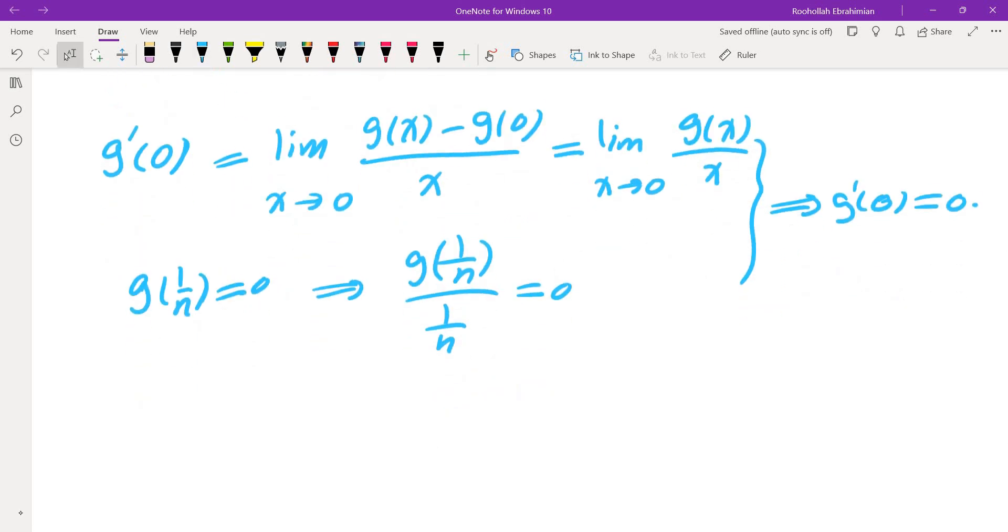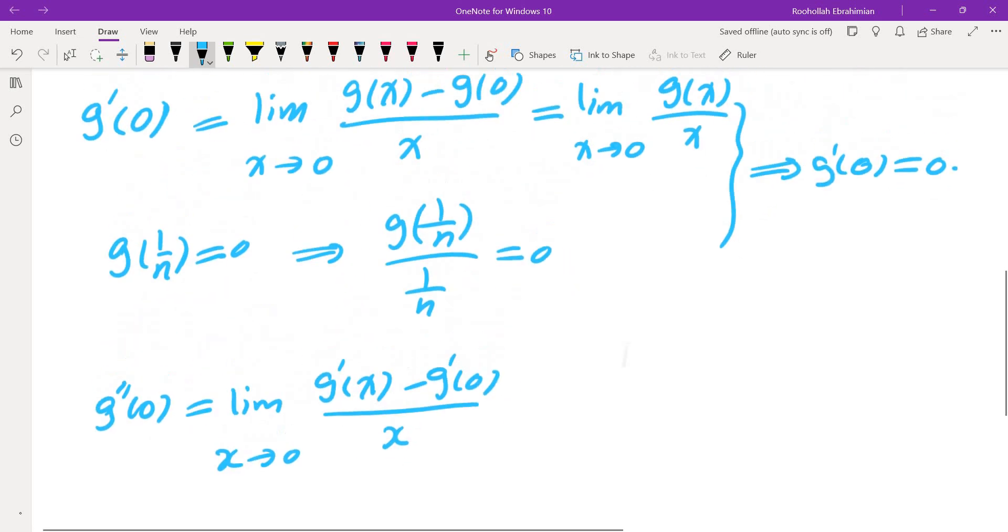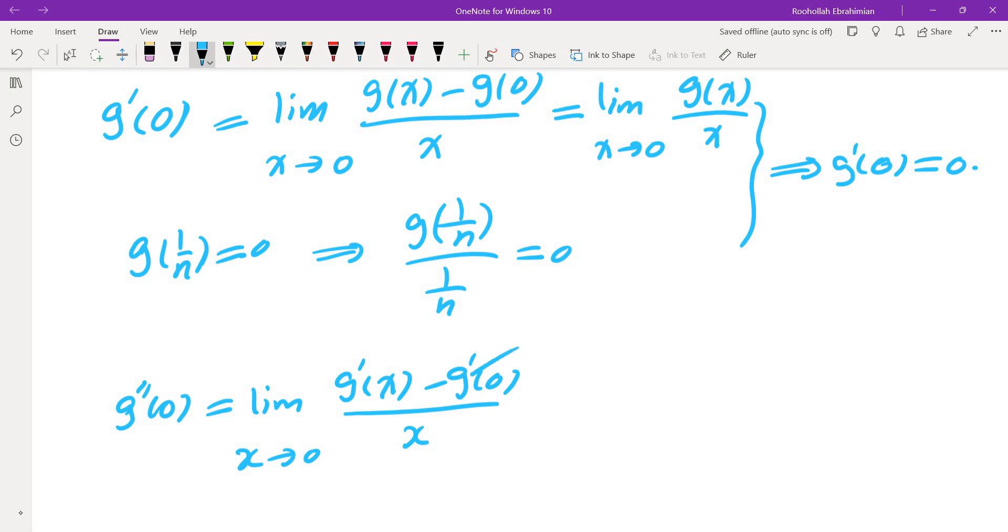Now if you want to find the second derivative of g at 0 you need to find the limit g prime of x minus g prime of 0 over x. Of course g prime of 0 is 0 as we just discussed so we can ignore this part. But we don't know g prime of x again. Do I know g prime of 1 over n?